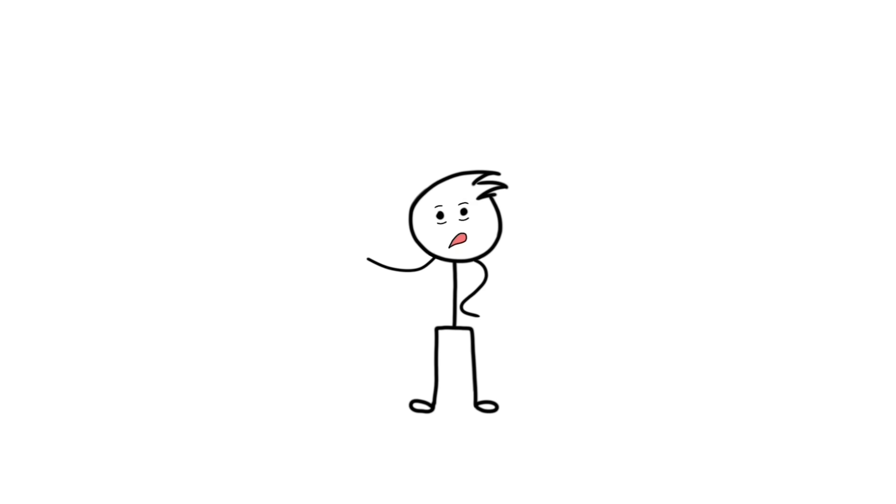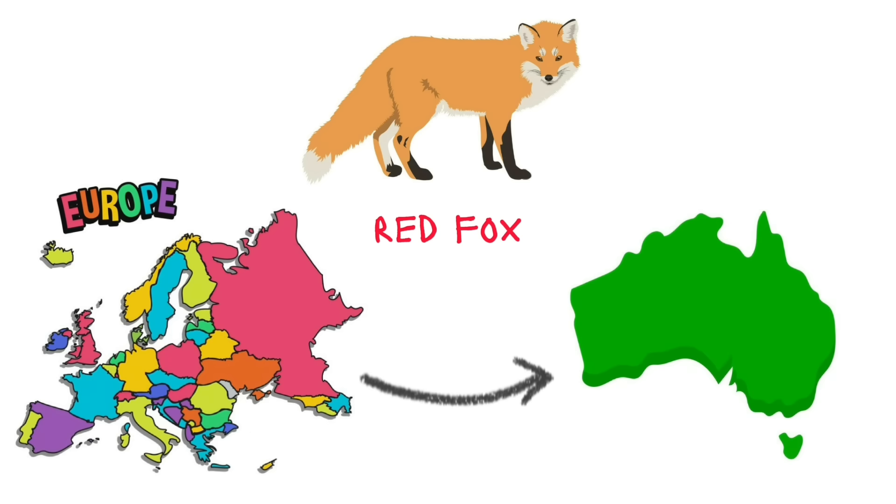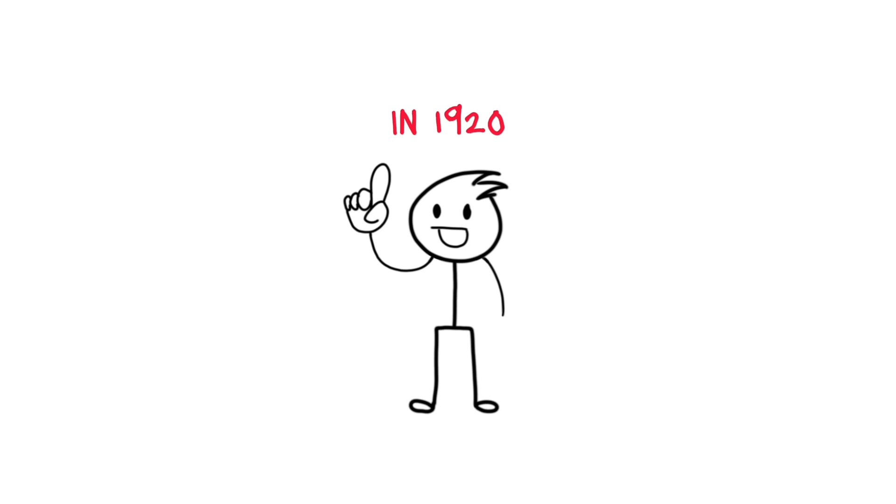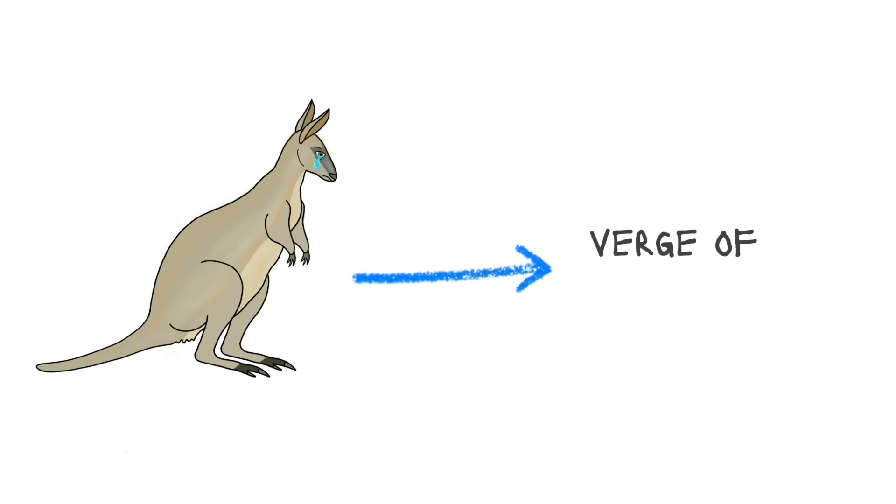And if that wasn't enough, they also introduced red fox from Europe to Australia. All these combined started eating the wallaby population. And in 1920, the wallabies were on the verge of extinction.